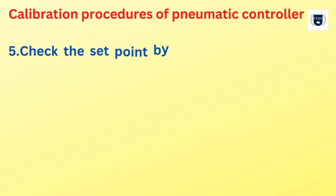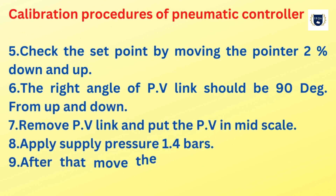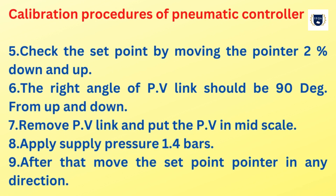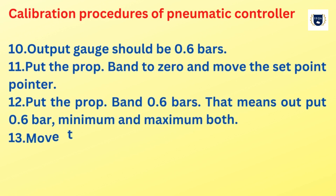Check the set point by moving the pointer up and down. The right angle of PV link should be 90 degrees from up and down. Remove the PV link and put the PV in mid-scale. Apply supply pressure 1.4 bars. After that, move the set point pointer in any direction. The output gauge should read 0.6 bars.